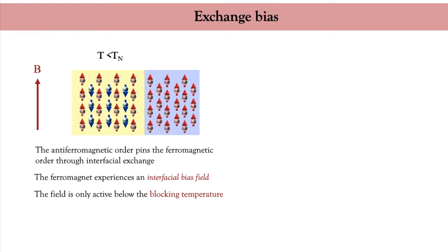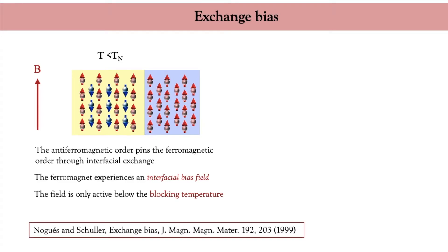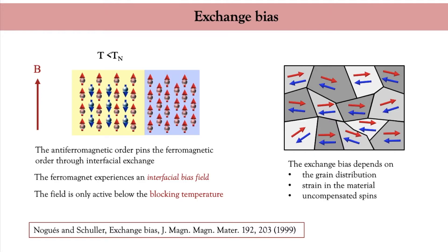The science of exchange bias is quite complex. In antiferromagnets, because there is no dipolar field, the magnetostrictive coupling between magnetic moments on the crystal lattice is very important. Therefore, the polycrystalline texture and grain distribution play an important role in exchange bias, as does the very nature of the uncompensated spin textures close to the interface.